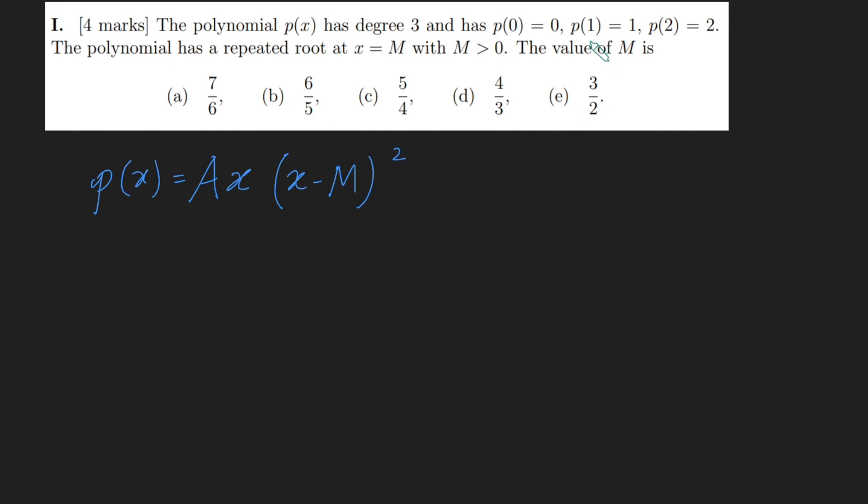Now we're going to use the facts here to help us get some equations involving A and M. If I plug in 1, I get 1 equals A times 1 times 1 minus M squared. And if I plug in 2, I get 2 equals A times 2 times 2 minus M squared, like so.